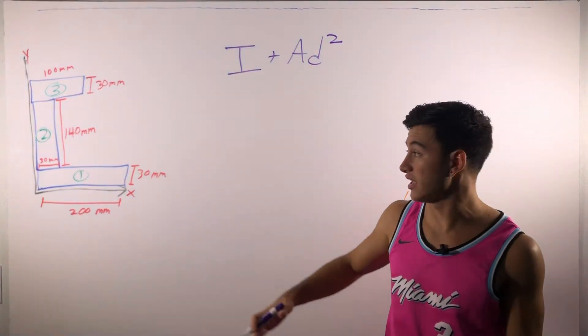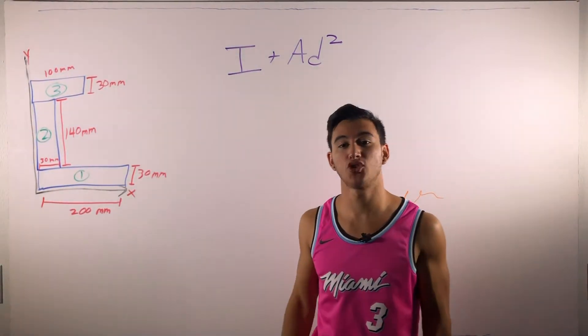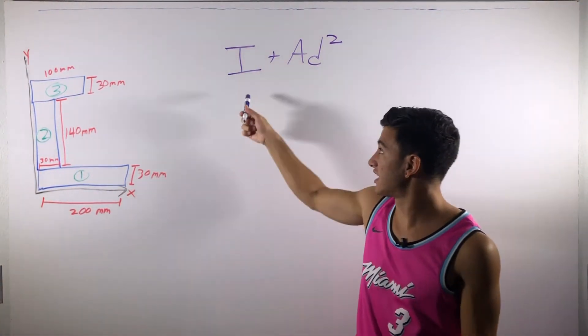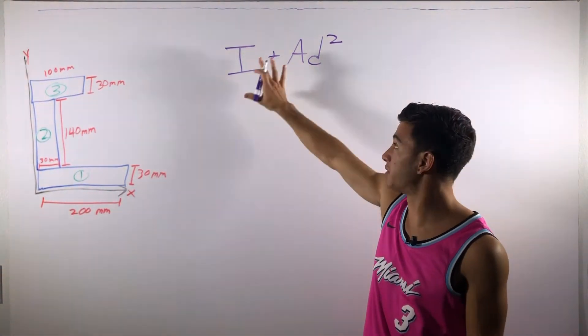I changes based on the shape of what we're dealing with. Triangles, or circles, or rectangles, they all have a different type of I equation in this bigger equation.